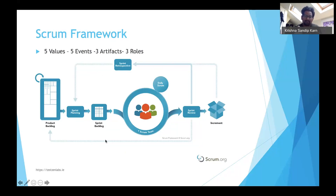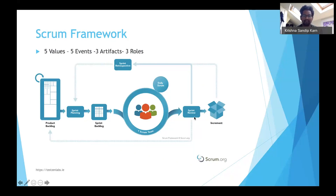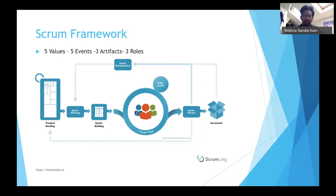You can see transparency, inspection, and adaptation poured into all of this. The product backlog is transparent, the sprint backlog is transparent, and the increment is transparent — shared with end users so they can review it. Goals and values are transparent. You have events like sprint planning, daily scrum, retrospectives, and review where inspection and adaptation happen, so people can take actions based on all the inferences drawn.